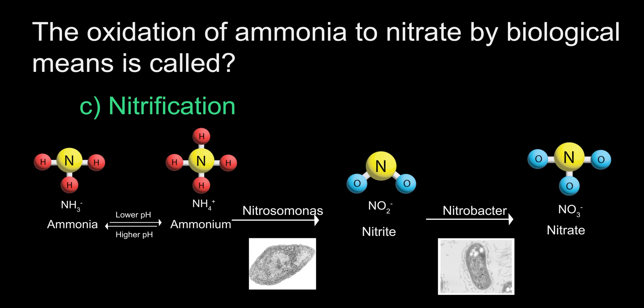The answer is C, Nitrification. On screen is a general overview of the nitrification process, which starts with ammonia. When ammonia comes into contact with water that has a pH of less than 9, which is often the case, the majority of ammonia turns into ammonium. This is what we're dealing with at the treatment plant.